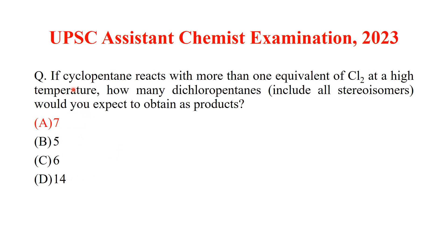If cyclopentane reacts with more than one equivalent of chlorine at high temperature, how many dichloropentanes including all stereoisomers would you expect to obtain as products? The answer is option A: 7 isomers.